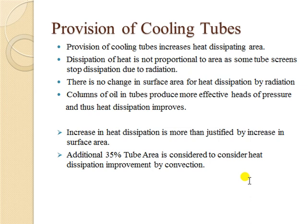Provision of cooling tubes increases the heat-dissipating area — earlier we considered only the area of the plane tank, but now we additionally consider the area of the tubes. However, tubes act as a hindrance to radiation between the tank surface and the external environment, so in tubes there is no radiation heat exchange — only convection. On the positive side, columns of oil in the tubes produce more effective pressure heads, improving heat dissipation. This improvement is more than justified by the increase in surface area, so an additional 35% of tube area is considered for convection-based heat dissipation improvement.